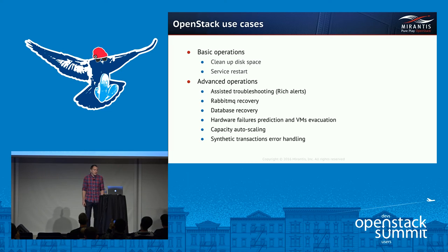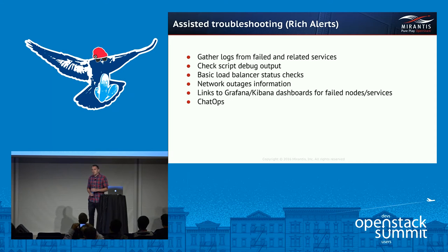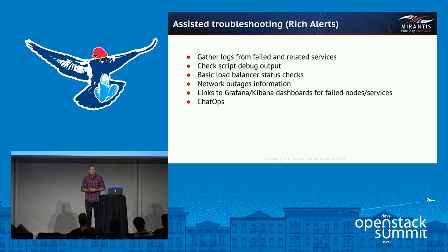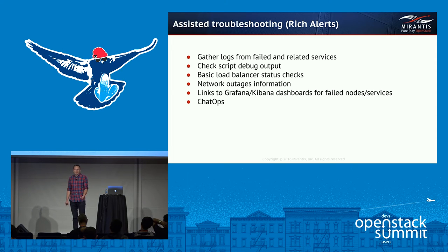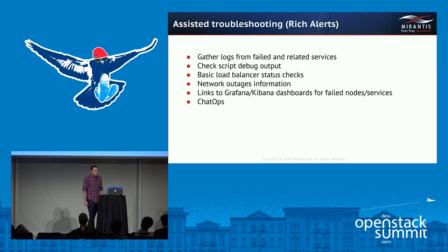What I want to focus on is more advanced operations. Assisted troubleshooting is when you get an alert and it's already supplied with some debugging information. Imagine you have a Keystone alert that's already showing an increased error rate metric. Together with the alert, in the same email, you can have information about logs, load balancer status checks, related services like Memcache, and links to Grafana and Kibana dashboards for easier identification. We can also hook up chat ops to that, triggering commands to get information about what's going on in the environment.